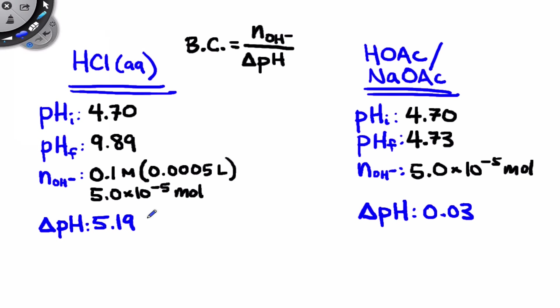So the buffer capacity in the HCl case comes out to 5.0 times 10 to the negative 5 divided by 5.19, which ends up being equal to 9.63 times 10 to the negative 6. We could put units on this, moles of strong base per pH unit of change in pH.